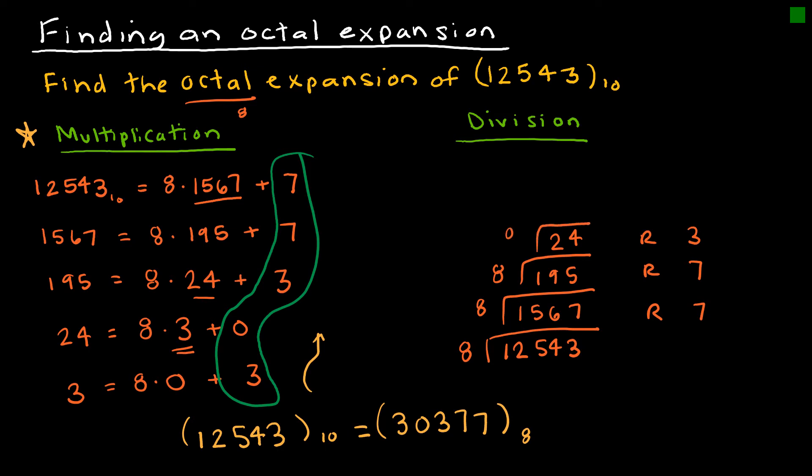I would divide by 8 again, and I would get 3 with a remainder of 0. Just like I said before, you are not done until you get to a 0.